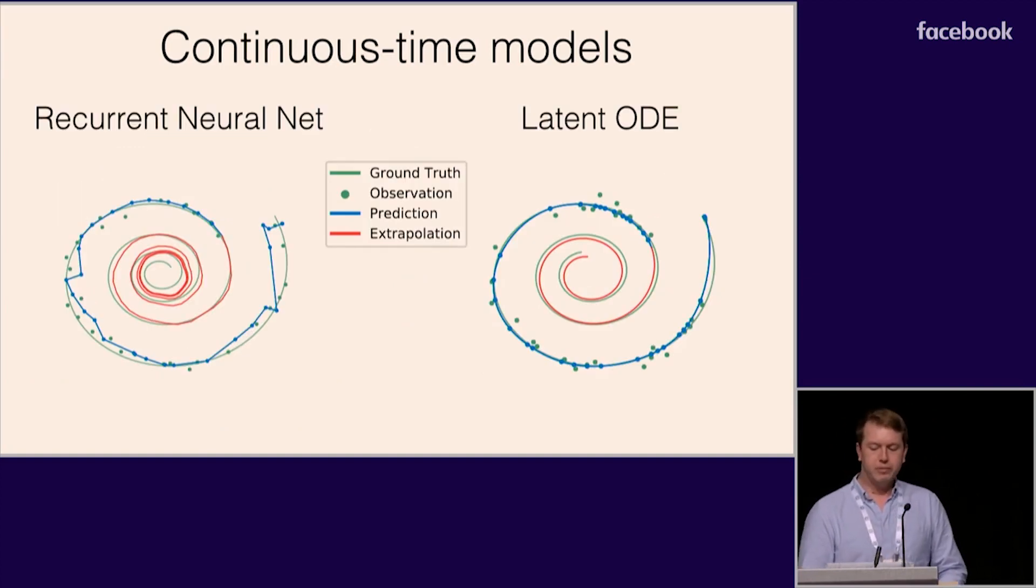Here, we show results on a toy problem where 2D observations are made at irregular times. On the right, you can see that the latent dynamics model smoothly interpolates between the data and extrapolates beyond it. On the left, the recurrent neural network doesn't have a well-defined state between observations, and it also extrapolates poorly. This is just a proof of concept, and we're working on scaling up these models and extending them to stochastic differential equations.